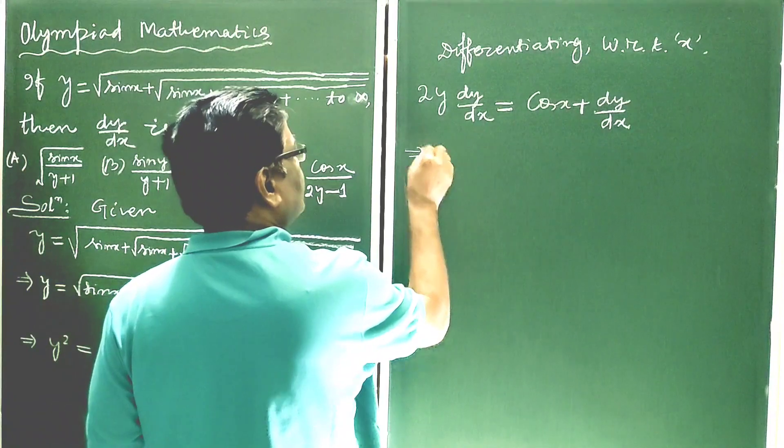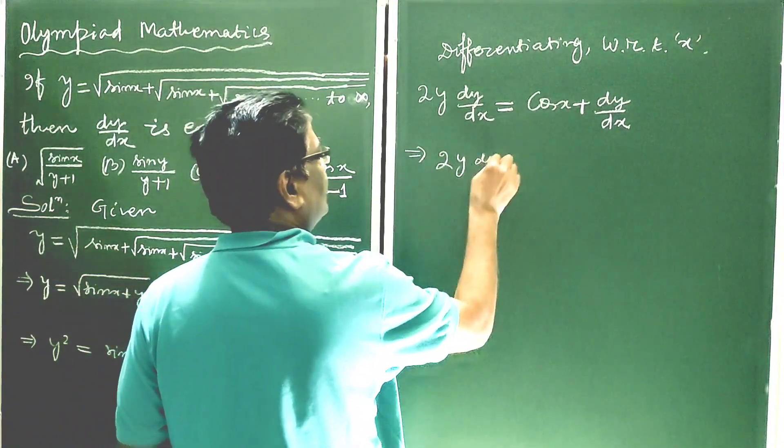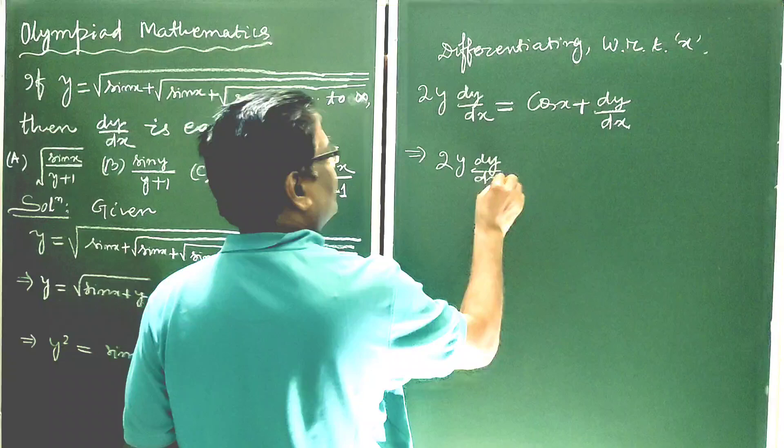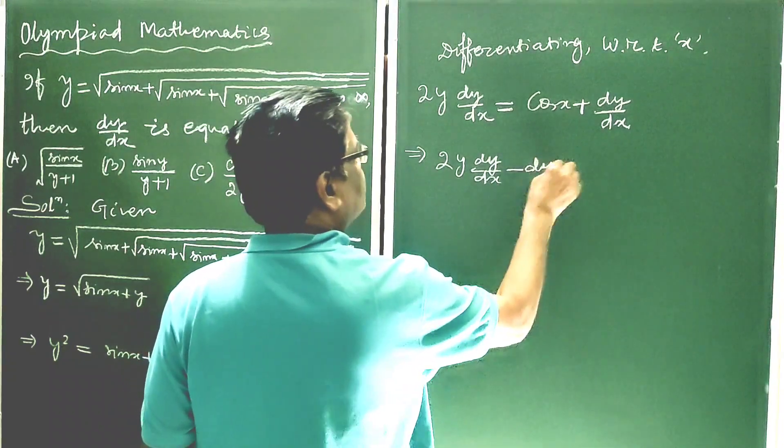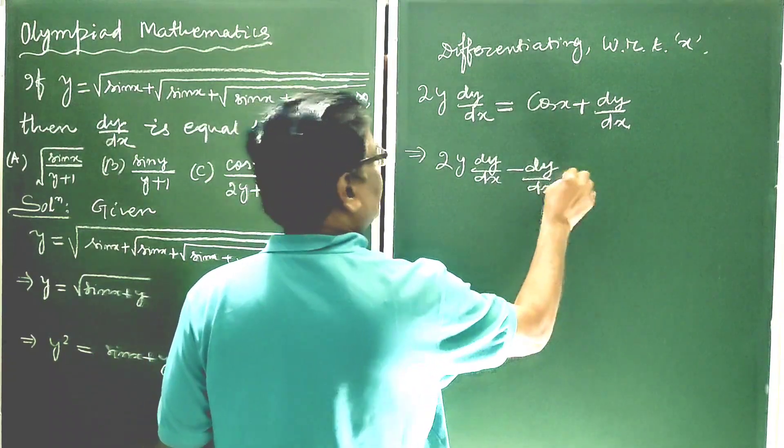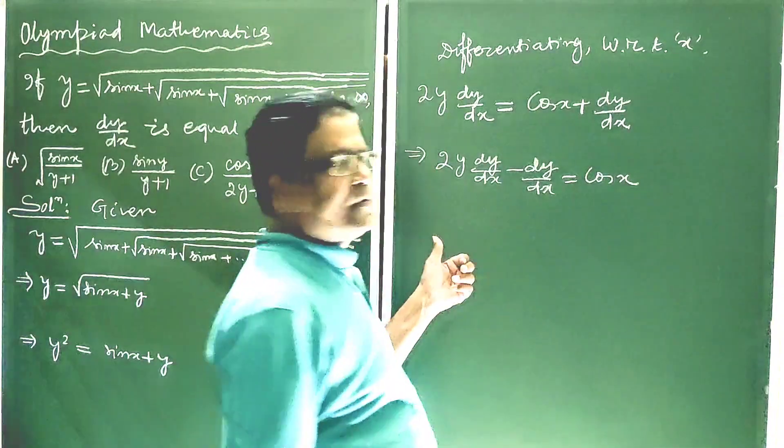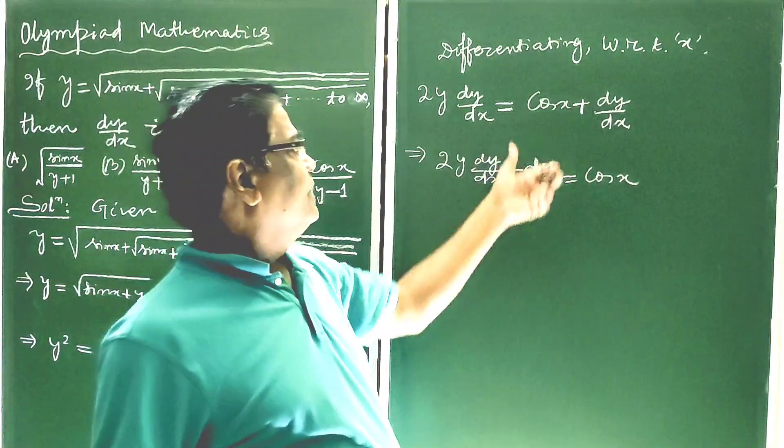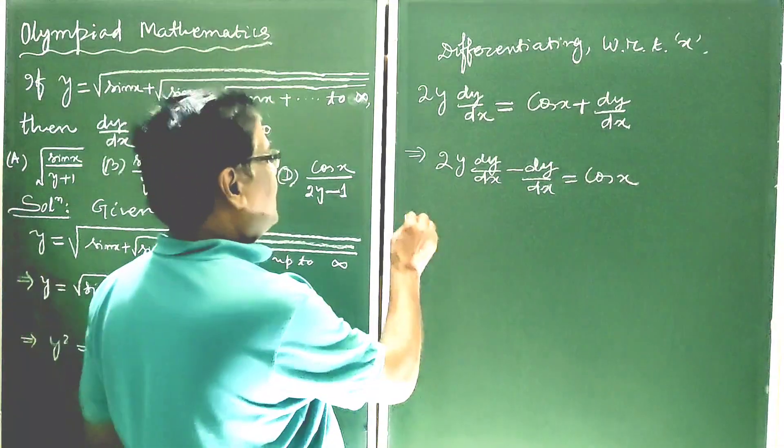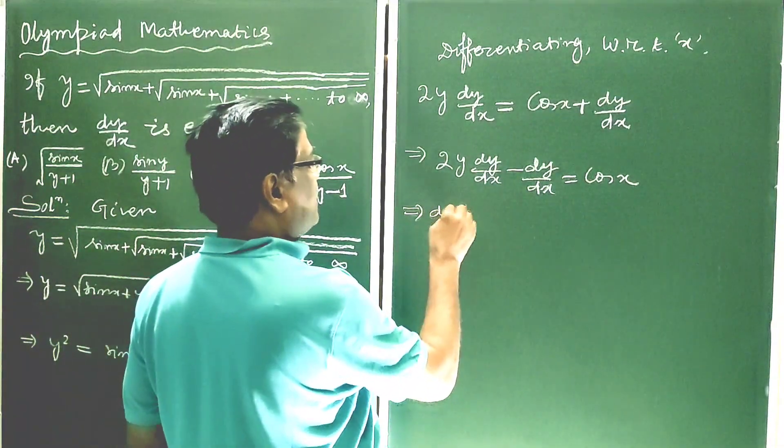This implies 2y dy by dx minus dy by dx is equal to cos x. The terms containing dy by dx are on the left hand side. Now let us take dy by dx common.